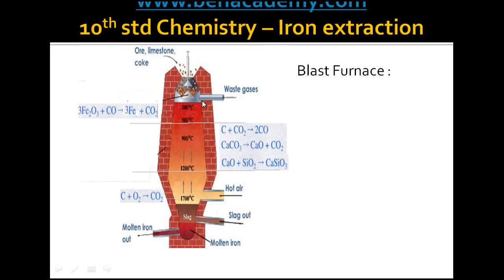Three main products are formed in the blast furnace: calcium silicate, iron, and carbon dioxide. Iron in molten form, being denser, sinks to the bottom of the furnace. Calcium silicate, being lighter than iron, is collected over the molten iron at the bottom. Carbon dioxide gas goes out through the chimney. The molten iron collected here is called pig iron, collected through the outlet at the bottom.